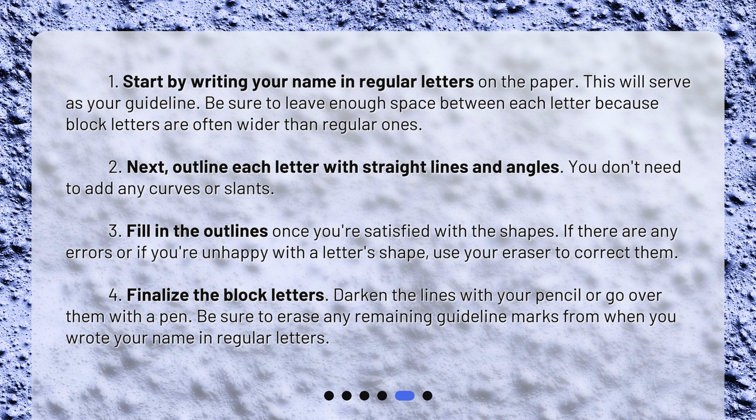Step 3: Fill in the outlines once you're satisfied with the shapes. If there are any errors or if you're unhappy with a letter's shape, use your eraser to correct them. Step 4: Finalize the block letters. Darken the lines with your pencil or go over them with a pen. Be sure to erase any remaining guideline marks from when you wrote your name in regular letters.